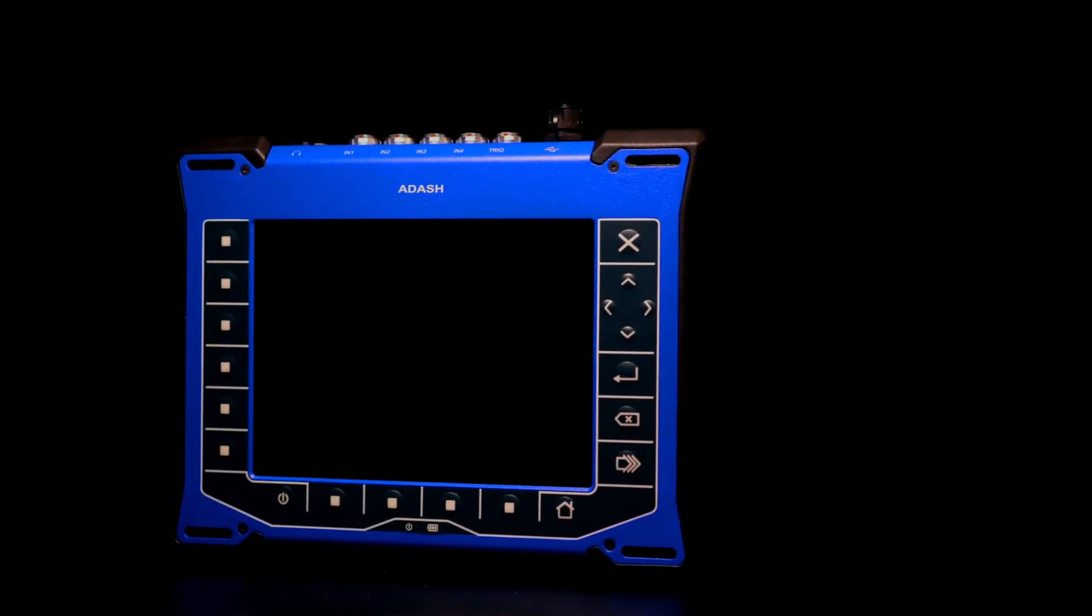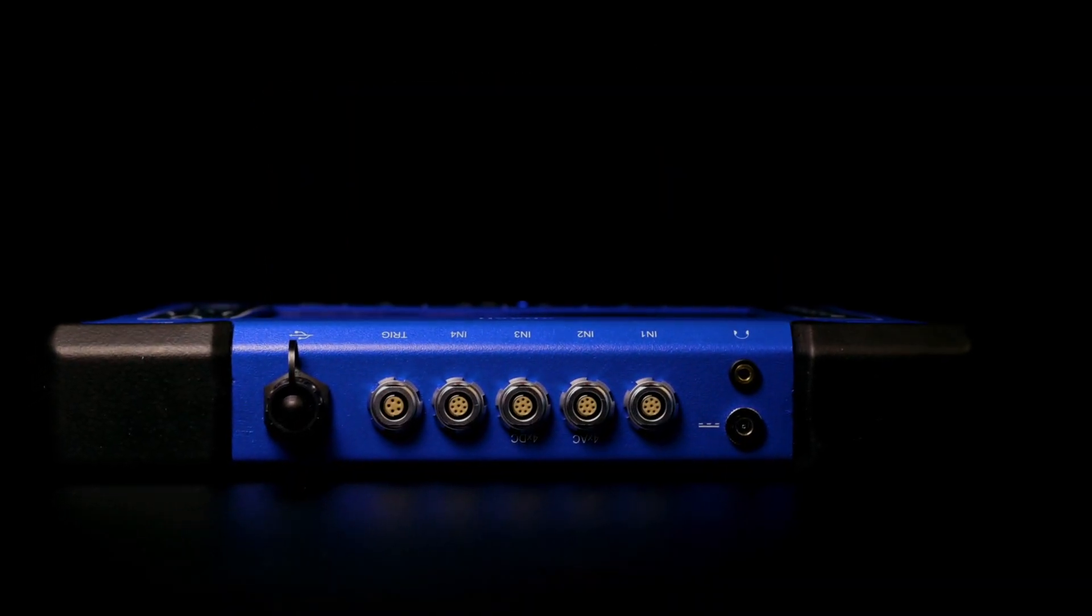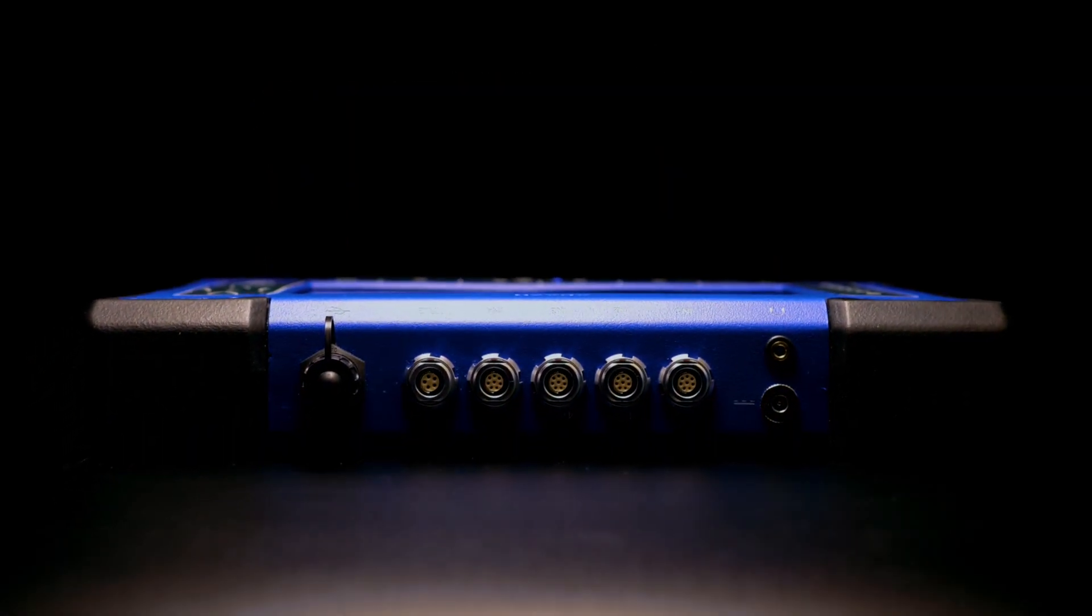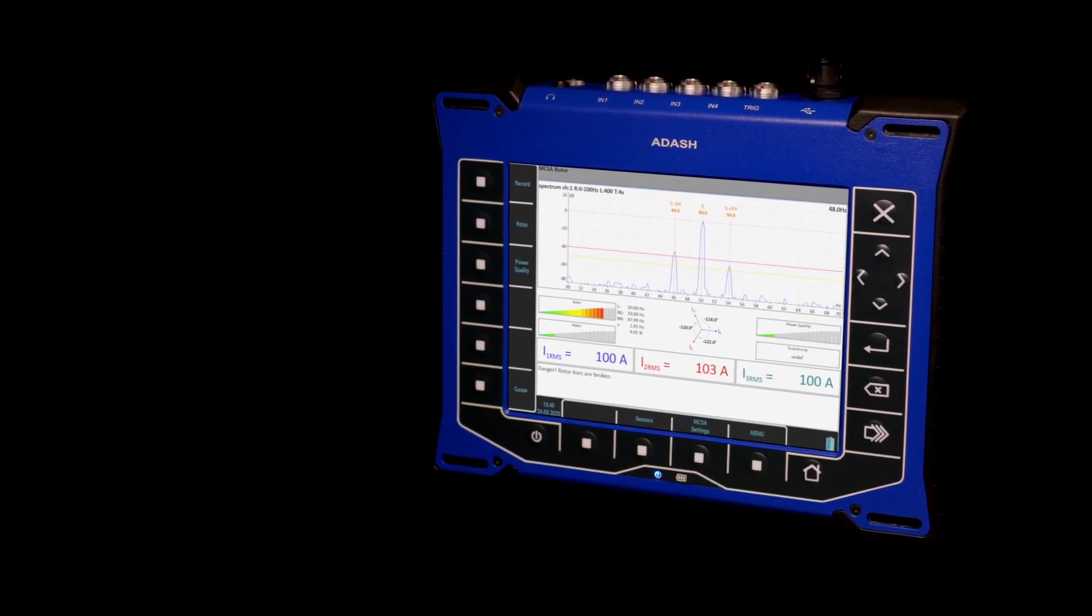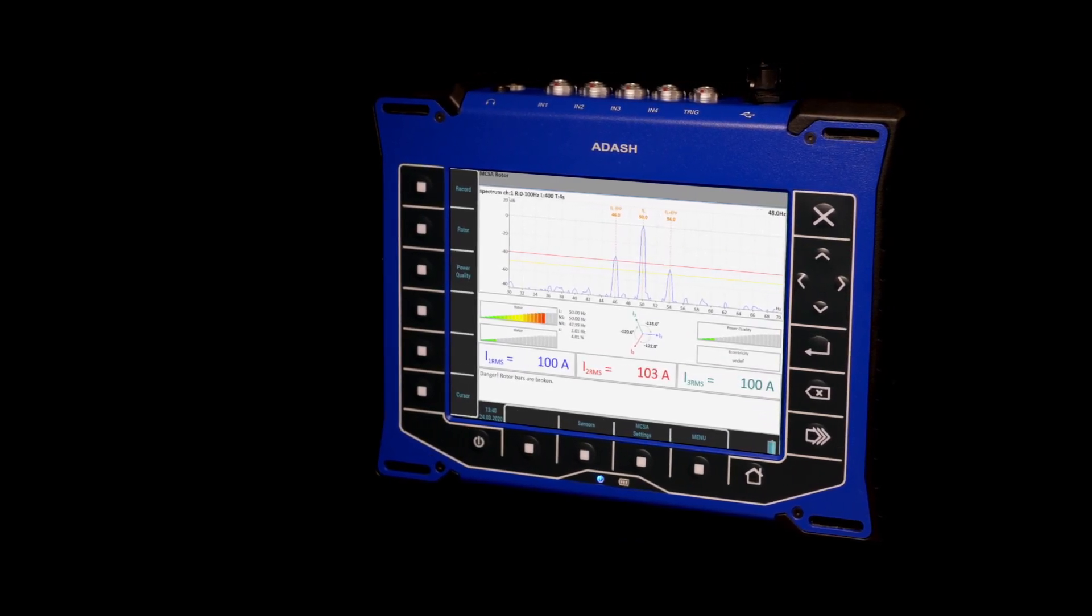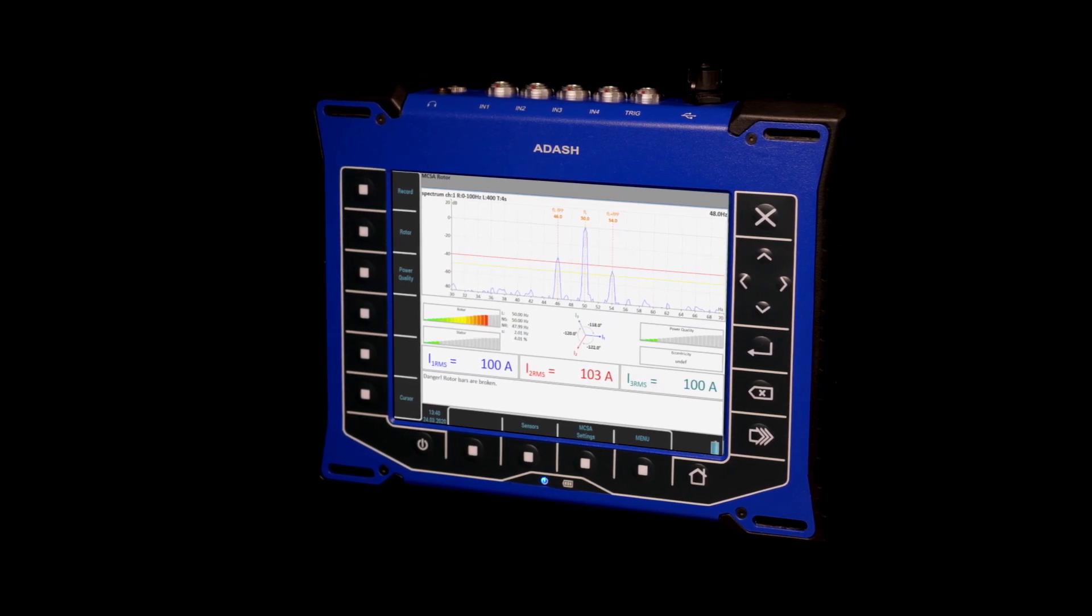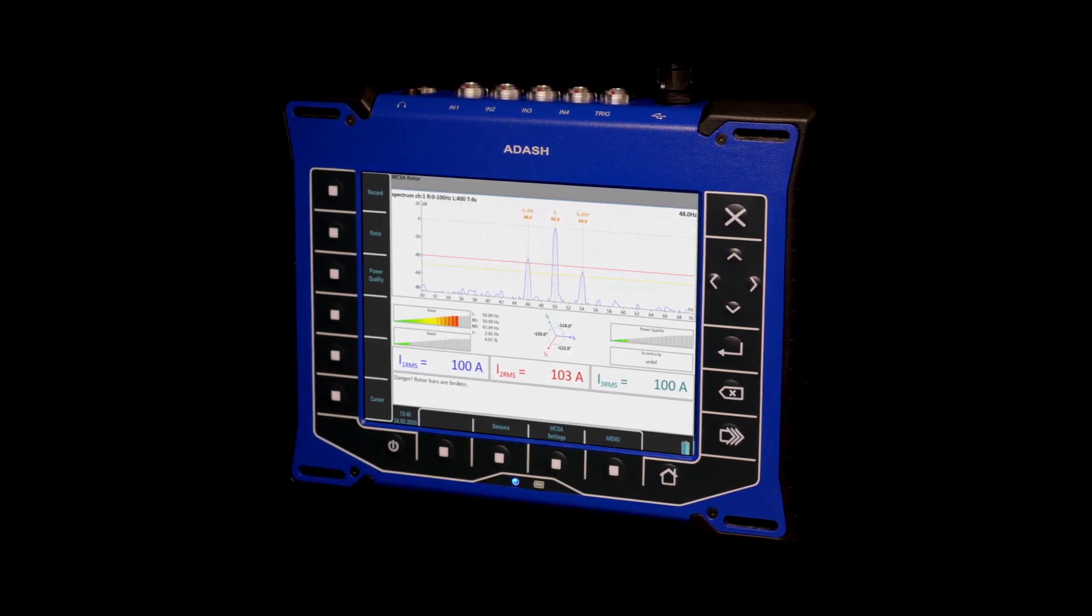The ADASH VA5 Pro vibration analyzer offers the unique capability of analyzing vibration and current in one device. In addition, the MCSA module expands the capabilities of the analyzer and allows you to do analysis of the current signature from the spectrum based on your knowledge and experience.